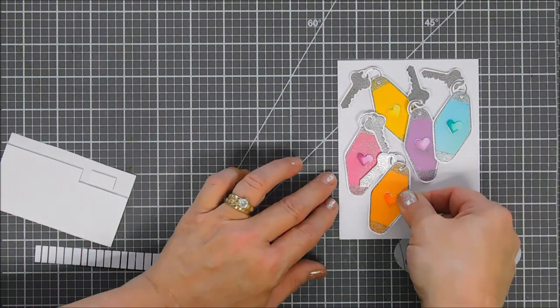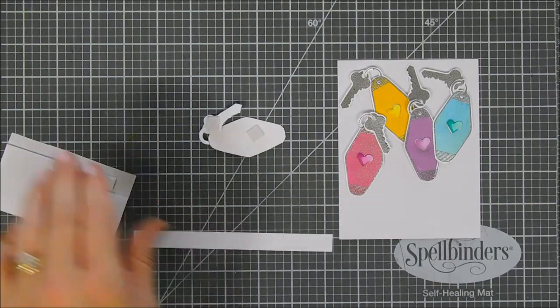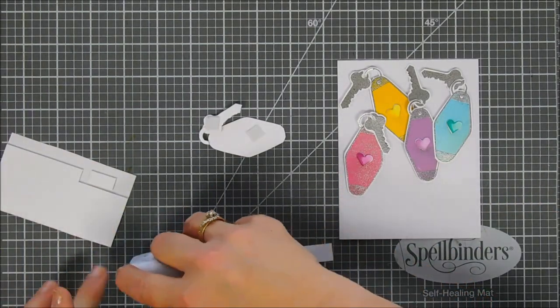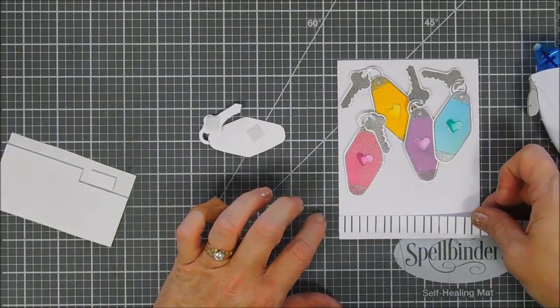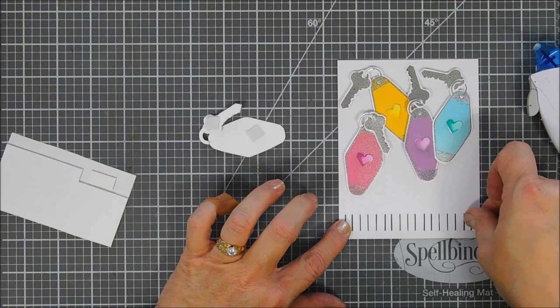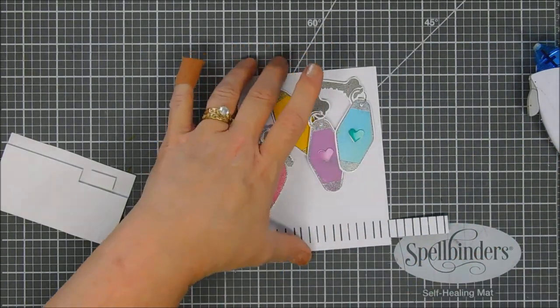This is going to go towards the bottom. Using the tape runner we'll adhere this about a quarter inch up from the bottom of our card base that way we still have room for our sentiment there.